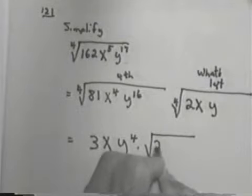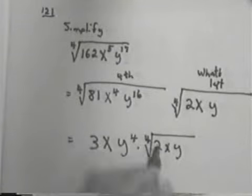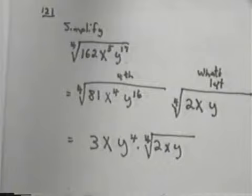And then I just bring down my what's left. So, it would be times 2xy. So, my answer is 3xy to the 4th times the 4th root of 2xy. Now, don't forget to put the index in. If you leave the index out, it's understood to be 2. In this case, the index should not be 2. It should be 4.